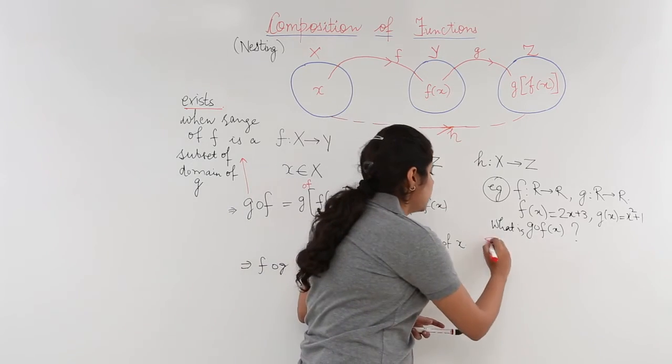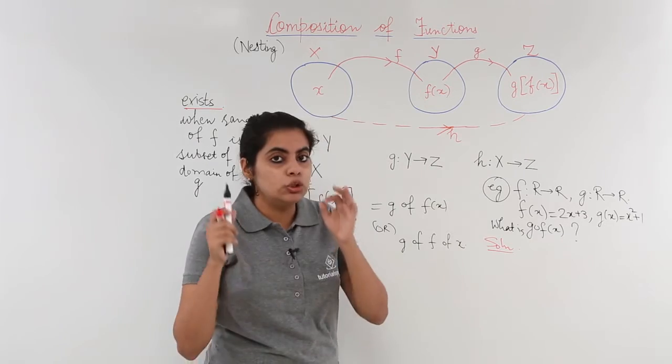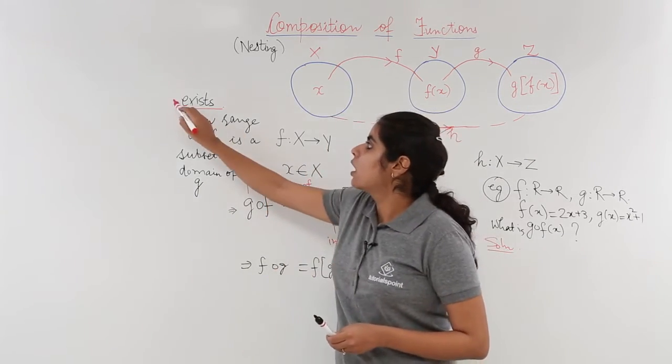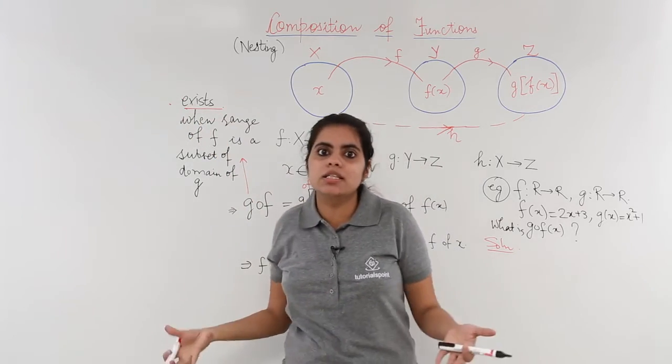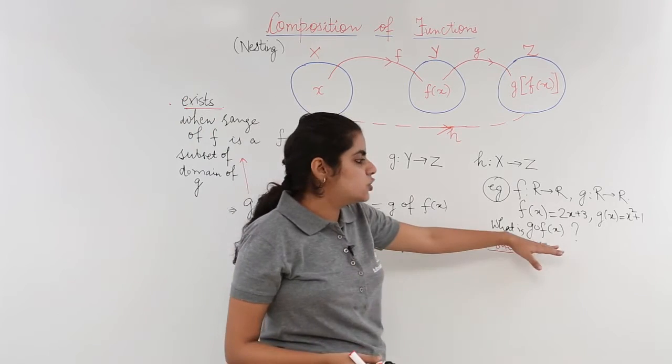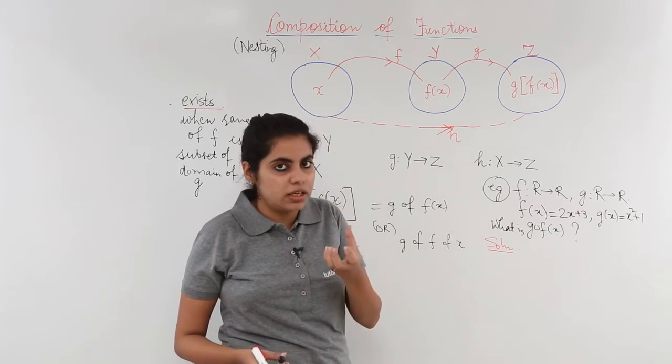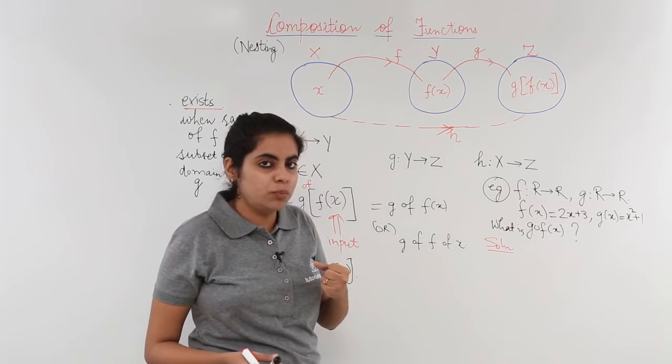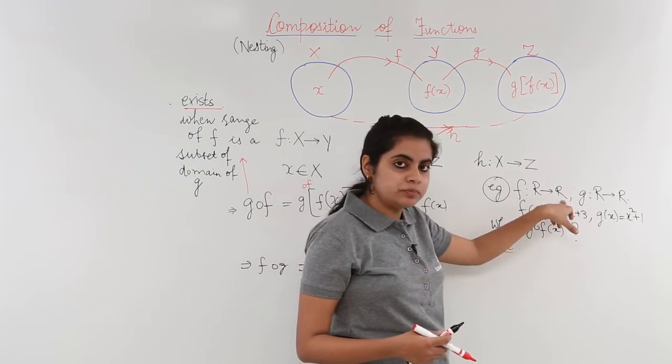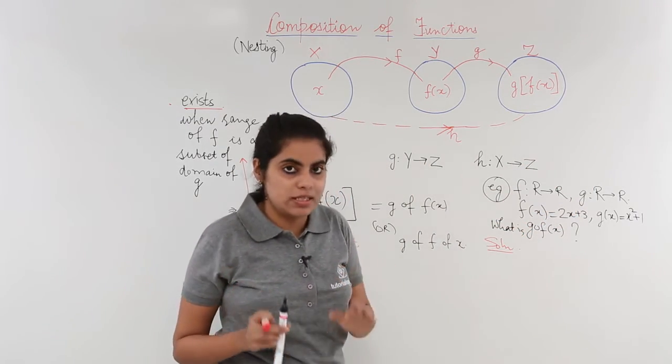The solution is very simple if you understand this theory. First thing you have to check, always in composition questions check this condition of exist, whether it exists or not. You cannot just start solving. So whether g∘f exists? g∘f would exist when range of f would become a subset of domain of g. Range of f is real. Real is a subset of real. Yes it is. So it exists.